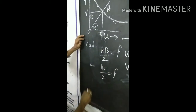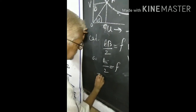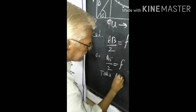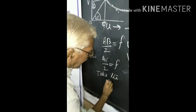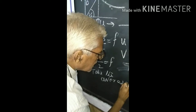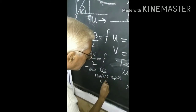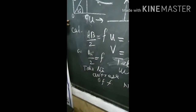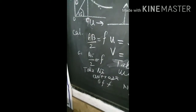Now take the average of the two focal length values. That will give you the final focal length. You must write this very clearly.